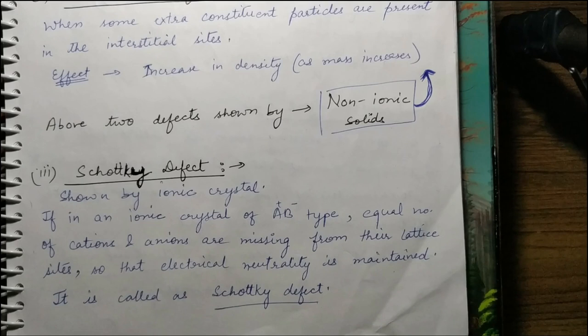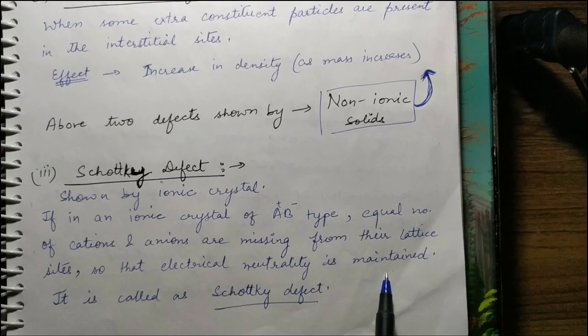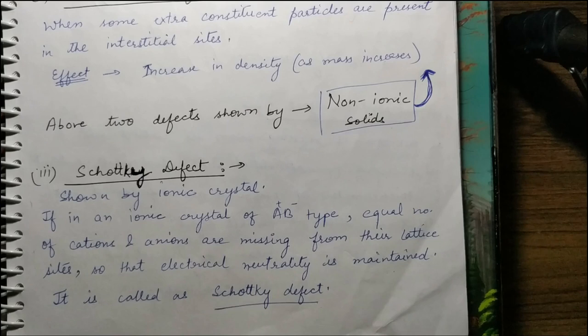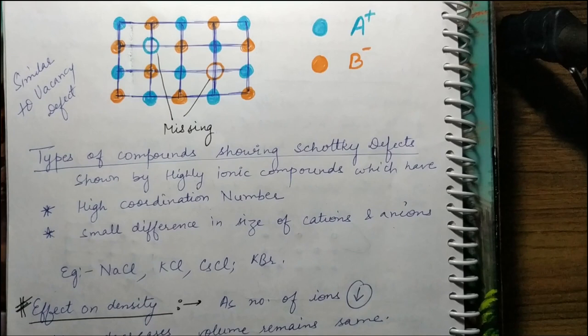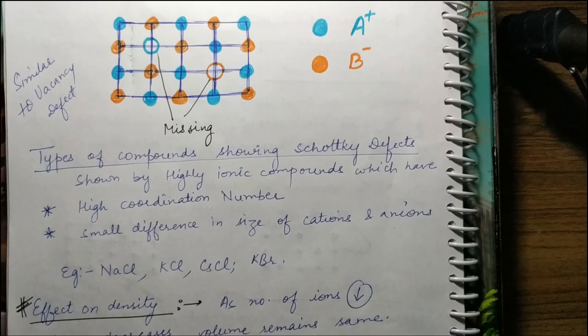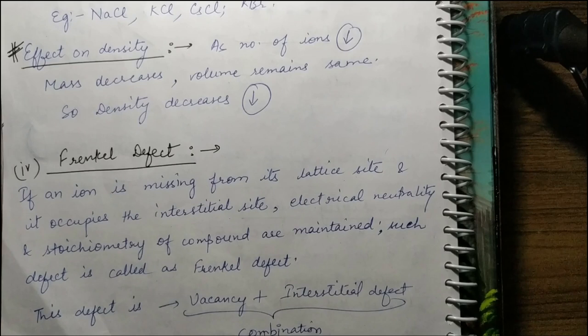For ionic solids, Schottky defect occurs where equal numbers of cations and anions go missing from lattice sites. This maintains electrical neutrality and stoichiometry, since both are missing in equal numbers so the ratio is maintained. Regarding density: since the number of ions decreases, the overall mass decreases, but volume remains the same, so density decreases.